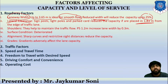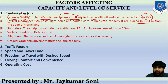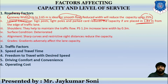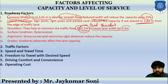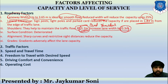The third roadway factor is shoulders. Shoulders serve as emergency lanes, as you learned in transportation engineering. They help maintain traffic flow. A paved shoulder of 1.2 meters can increase the effective lane width by 0.3 meters.